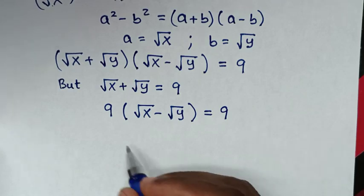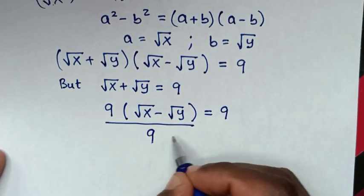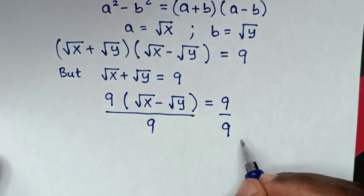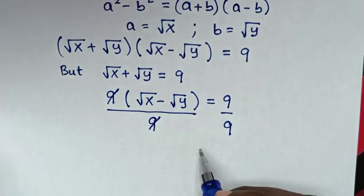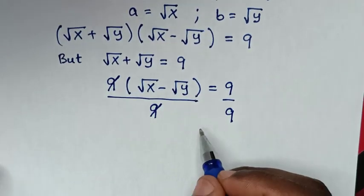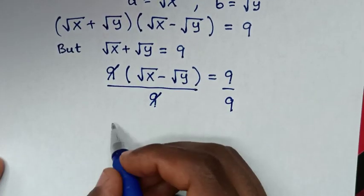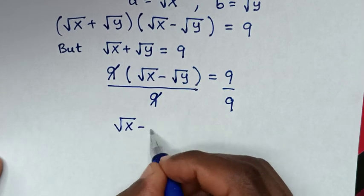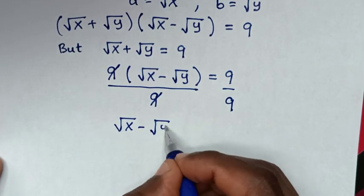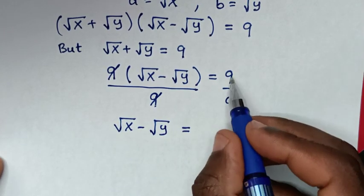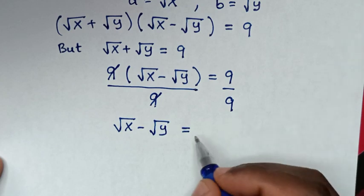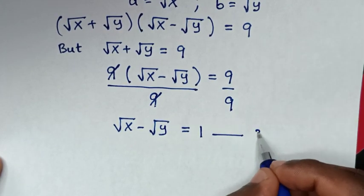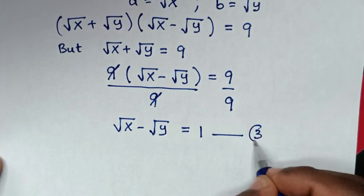We divide both sides by 9. The 9s cancel, leaving √x minus √y equals 1. We call this equation 3.